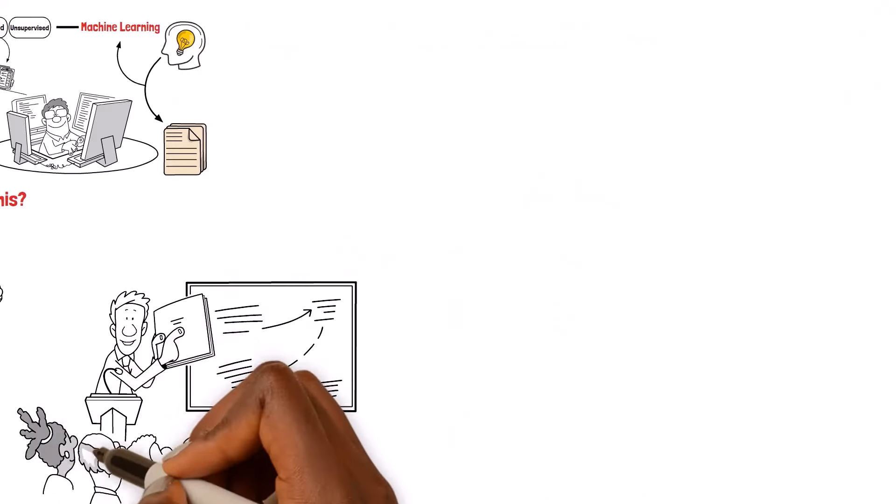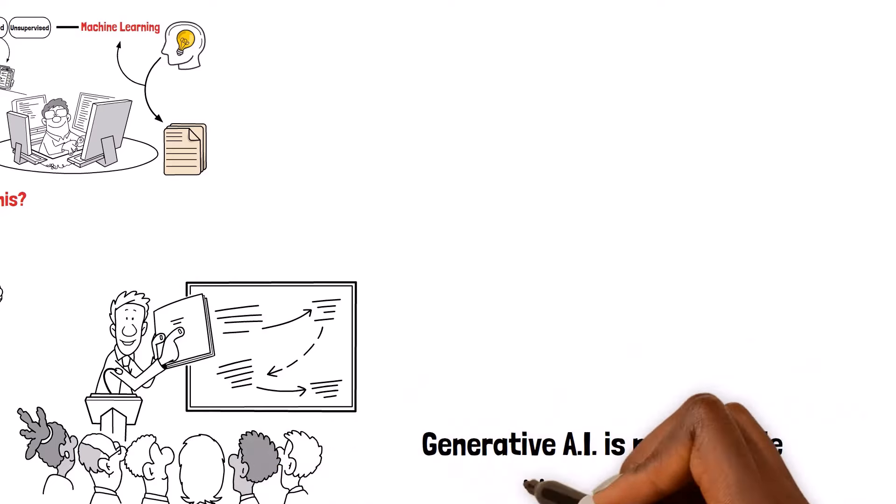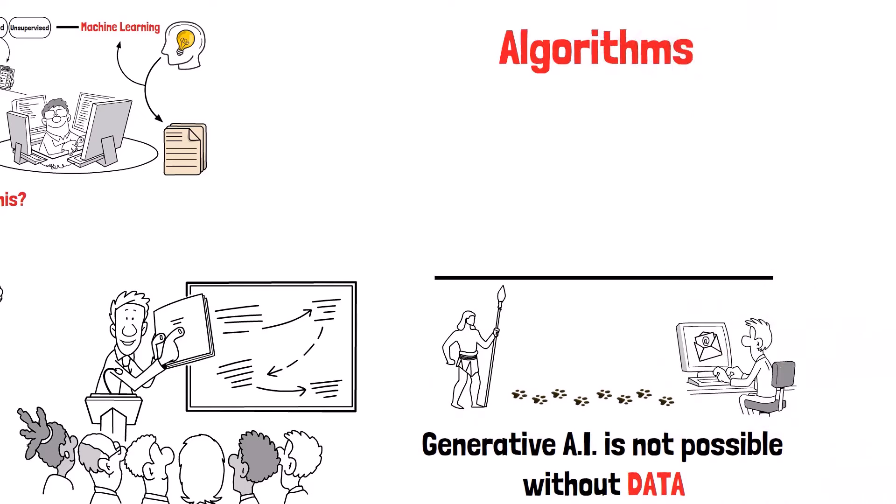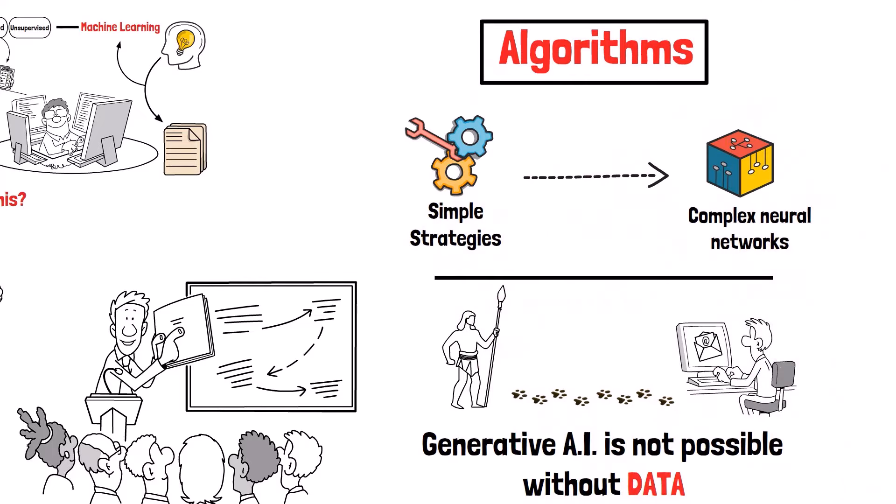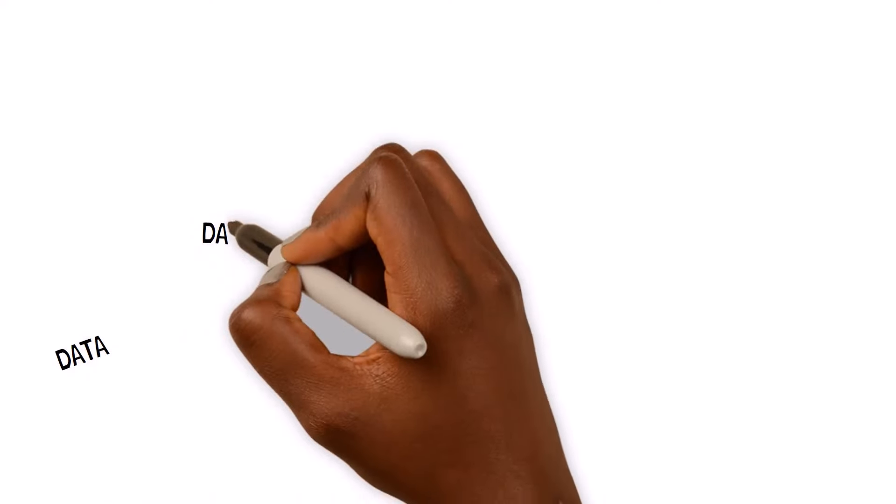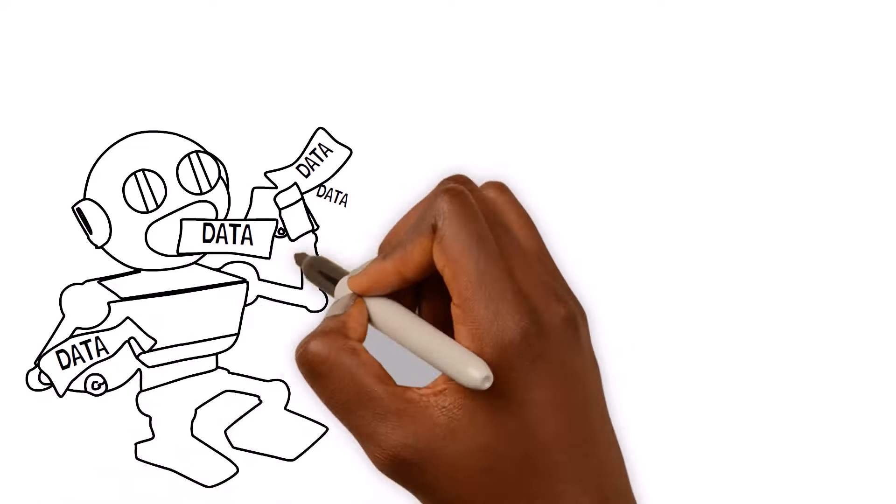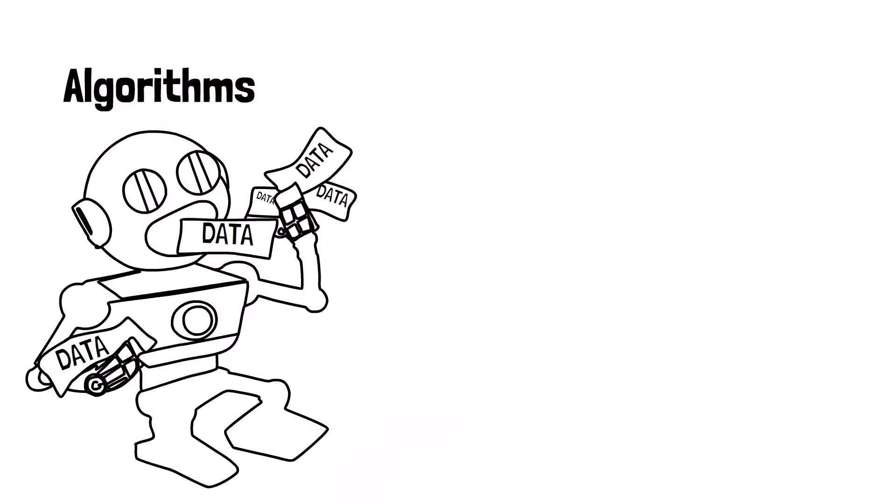But remember, none of this generative AI, or AI in general, would be possible without data, from ancient footprints to today's tweets, and algorithms, from simple hunting strategies to complex neural networks. And who knows what incredible things AI will create in the future, as we keep feeding it more data and coming up with even smarter algorithms.